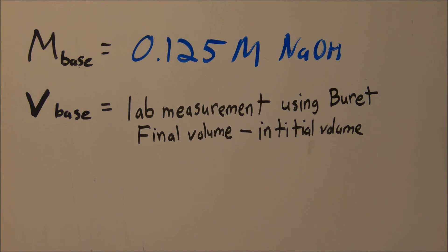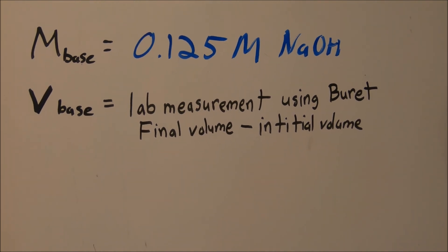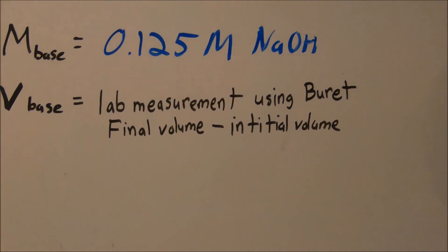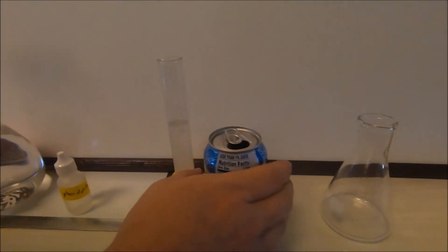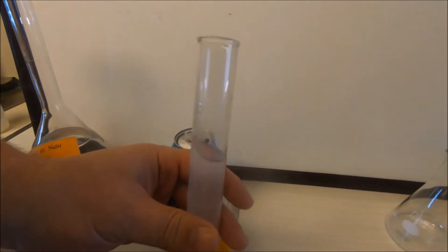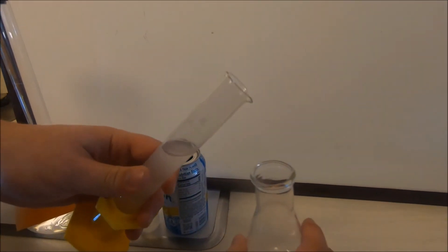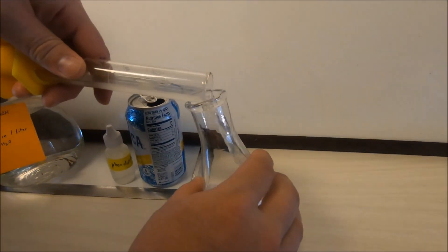Our next step now is going to be to find the volume of that base. We're going to start out taking our Fresca and adding it to the Erlenmeyer flask.